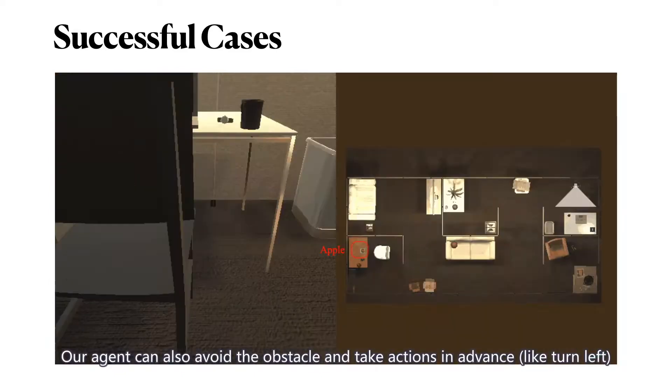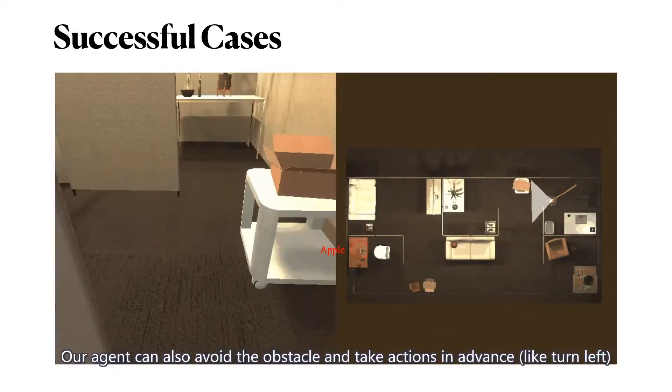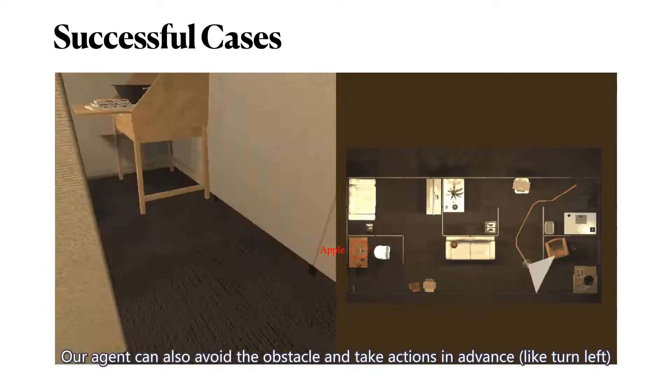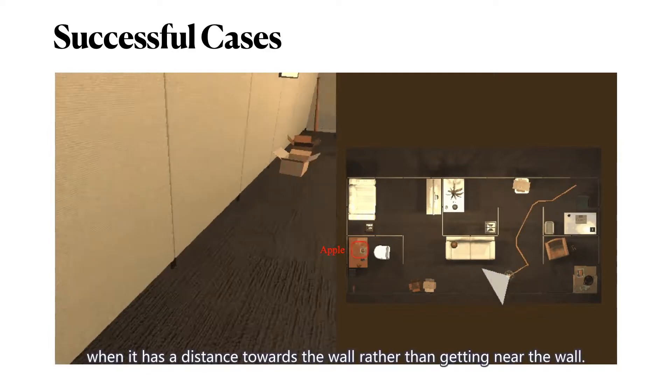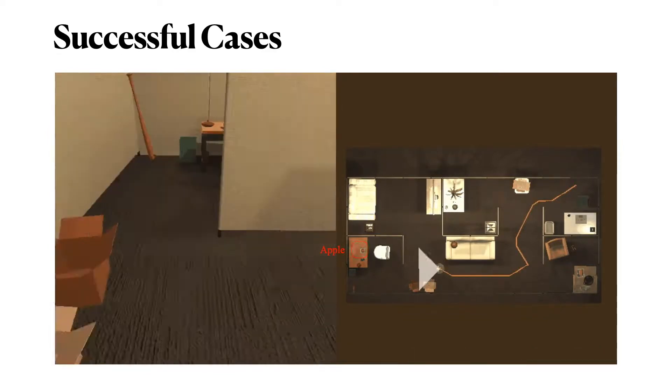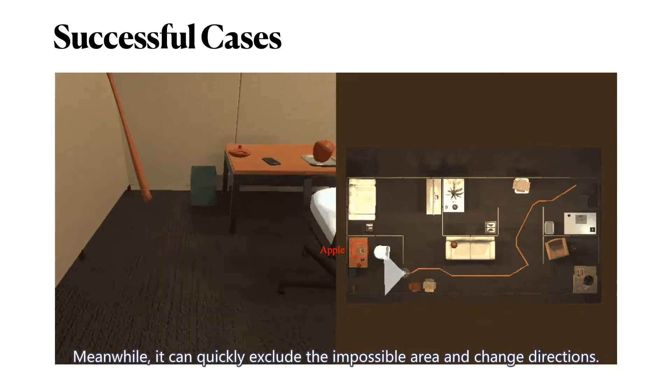Our agent can also avoid the obstacle and take actions in advance, like turn left when it has a distance towards the wall rather than getting near the wall. Meanwhile, it can quickly exclude the impossible areas and change directions.